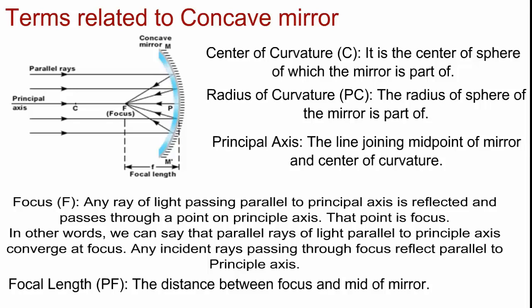Any incident ray passing through focus reflects parallel to the principal axis. Focal length: focal length is distance between focus and midpoint of the mirror.